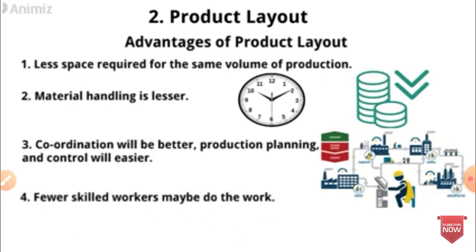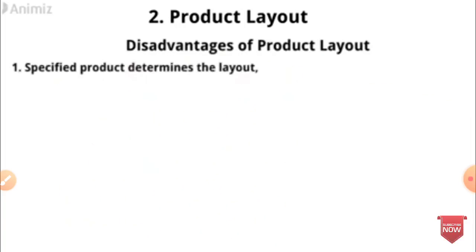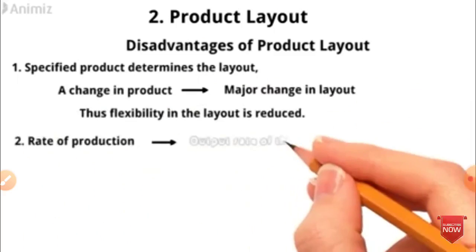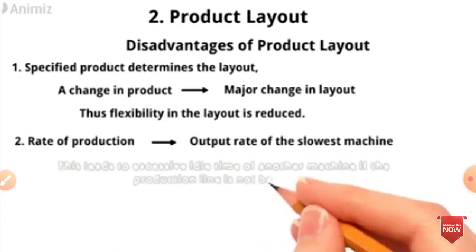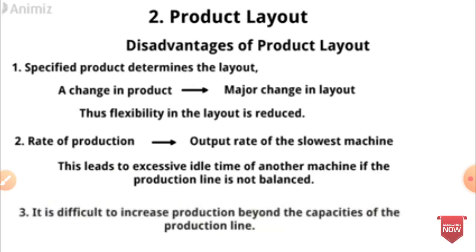Disadvantages of Product Layout: First, a specified product determines the layout, so a change in product causes a major change in layout, thus flexibility in the layout is reduced. Second, the output rate is determined by the slowest machine, which leads to excess idle time of other machines if the production line is not balanced. Third, it is difficult to increase production beyond the capacity of the production line.